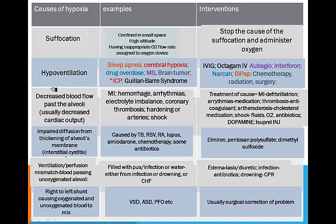A third cause of hypoxia is decreased blood flow past your alveoli, usually because you have a decreased cardiac output — your body is not pumping enough blood through your heart. That can be due to an MI, hemorrhage, an arrhythmia causing the heart not to pump efficiently, electrolyte imbalance, coronary thrombosis blocking the flow of blood to your heart, hardening of the arteries, and shock, which causes a cascade reaction making your capillaries very permeable.